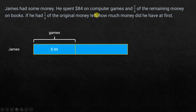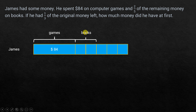He is dividing the remaining money into five parts and two of those units he's spending on books. If he had one-third of the original money left — whatever he has now is one-third, meaning one out of three parts. If you divide the total amount of money into three parts, then what remains will be equal to one part.